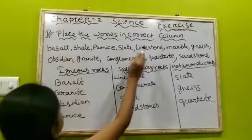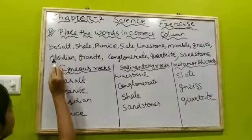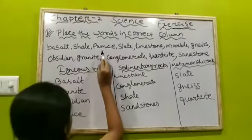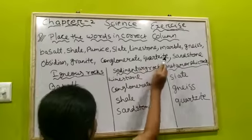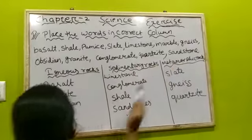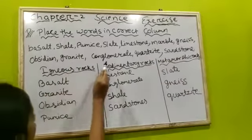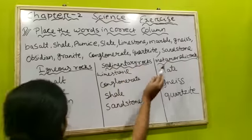We place the words in the correct column. The options are: basalt, shale, pumice, slate, limestone, marble, gneiss, obsidian, granite, conglomerate, quartzite, sandstone.